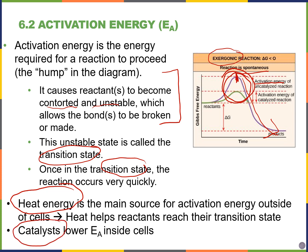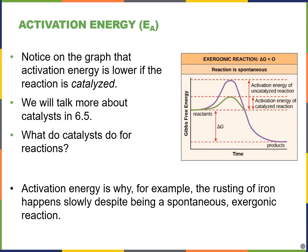Catalysts are what are going to lower the activation energy inside our cells. The method by which catalysts speed up reactions — or catalyze reactions — is by lowering the activation energy. I can see in the purple line this is the reaction without a catalyst — it's uncatalyzed — and the reaction in green is with the catalyst. The purpose of the catalyst is to lower the activation energy and thereby speed up the reaction rate.